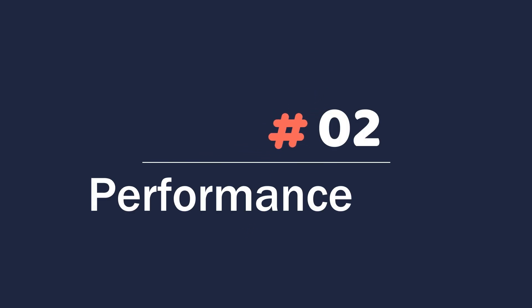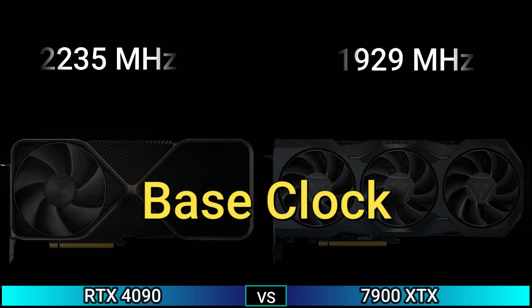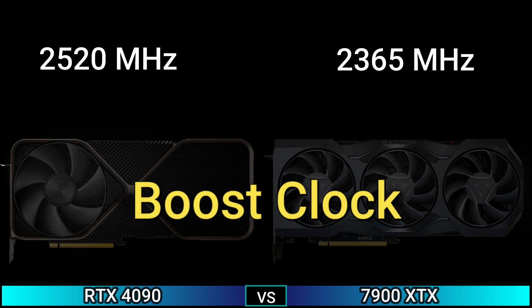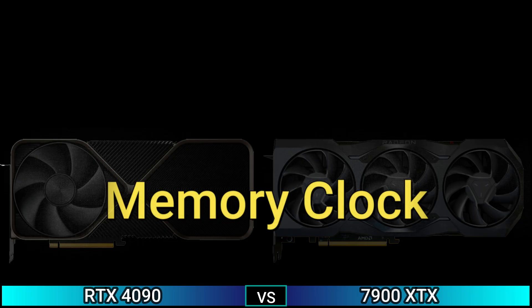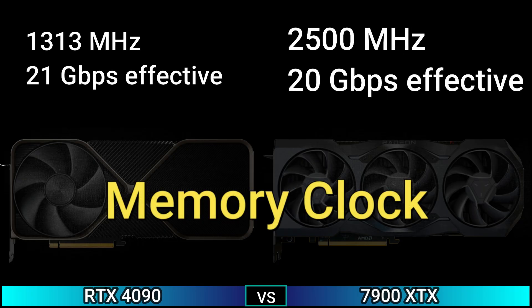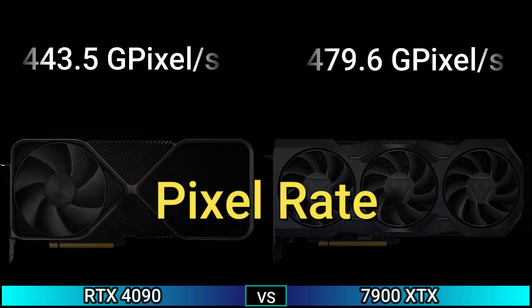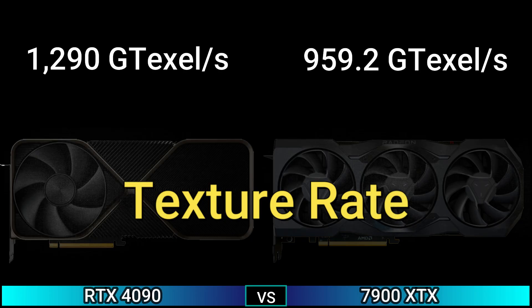Next, performance: base clock 2235 MHz and 1929 MHz, boost clock 2520 MHz and 2365 MHz. Memory clock 1313 MHz (21 Gbps effective) and 2500 MHz (20 Gbps effective). Pixel rate 443.5 GP/s and 179.6 GP/s. Texture rate 1290 GT/s and 959.2 GT/s.